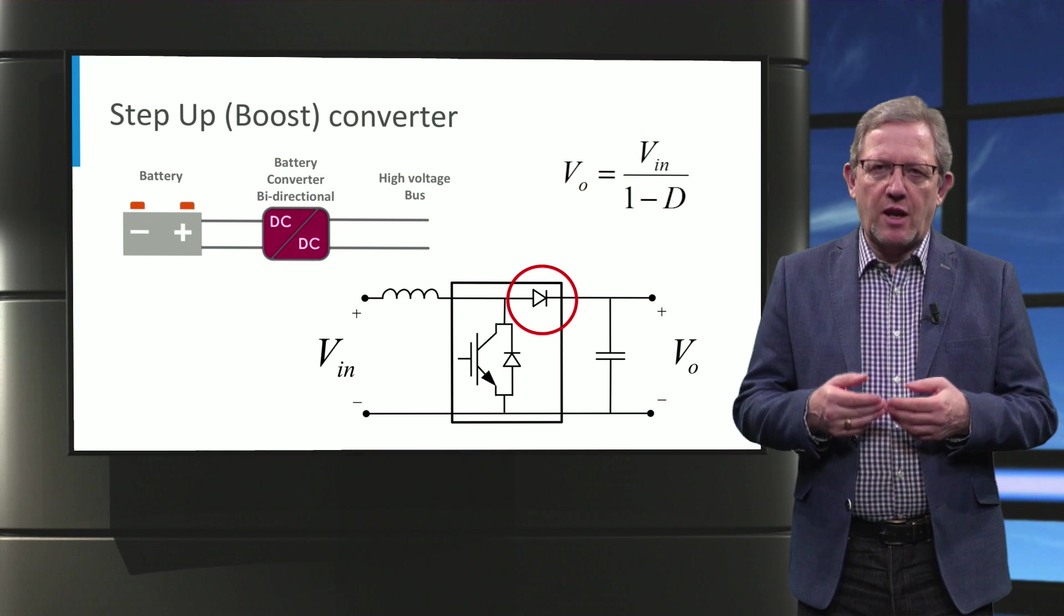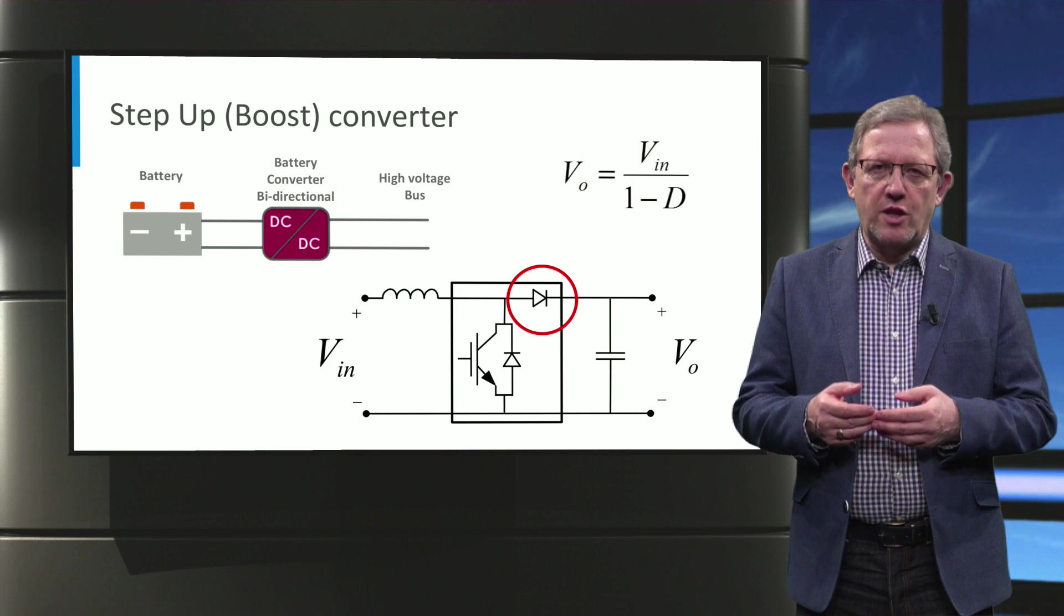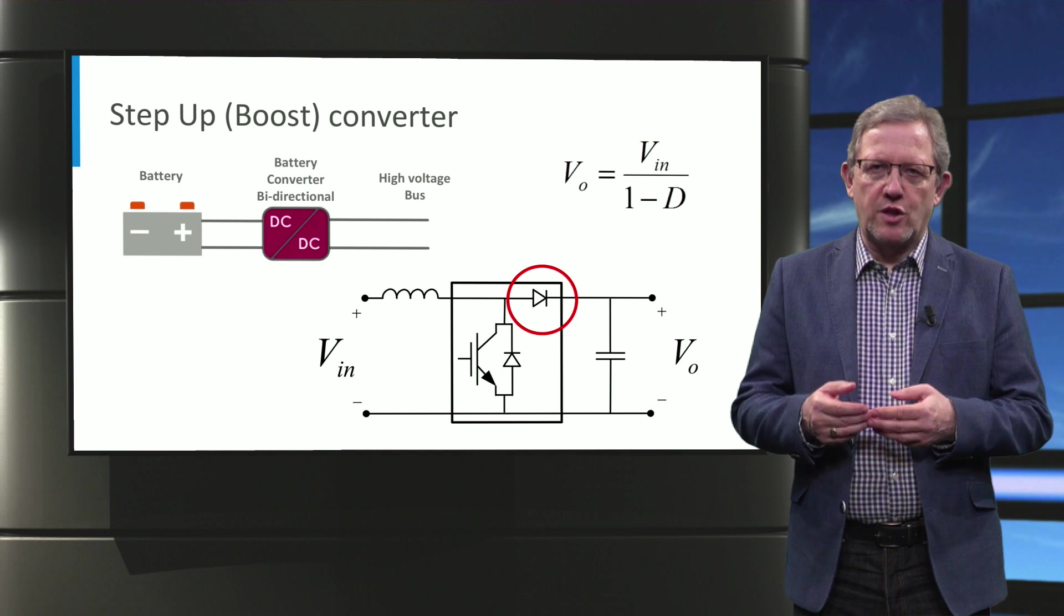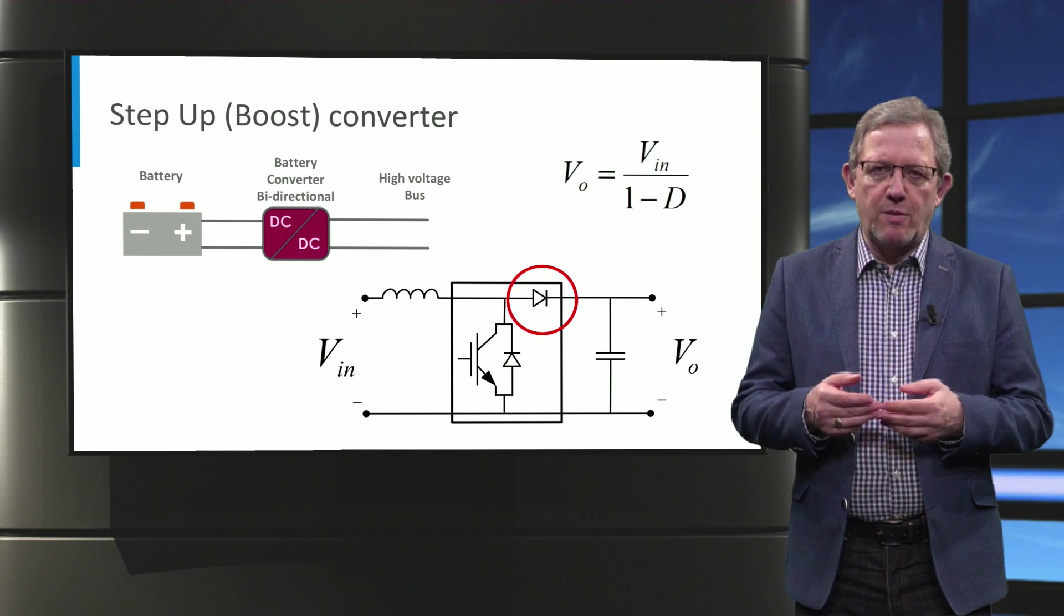The output voltage of a boost converter is calculated by the input voltage divided by 1 minus the duty cycle of the switch. This can be proved by a simple equation.